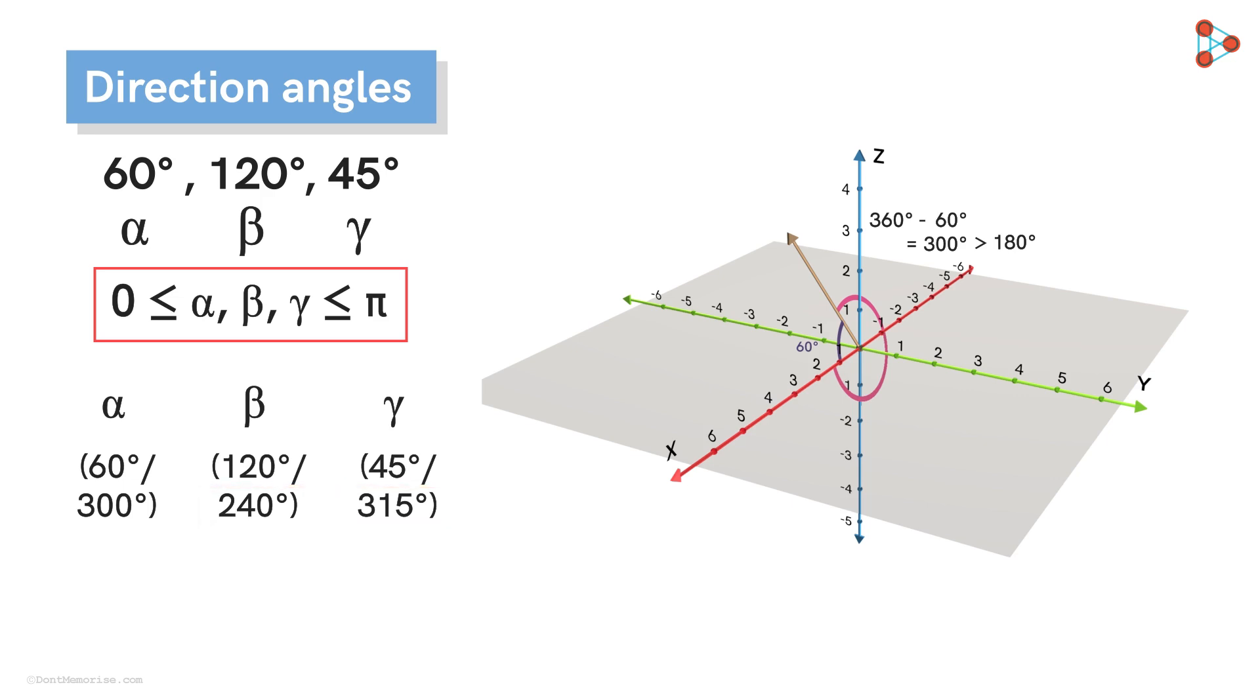So as you can see, there can be eight possible sets of direction angles for this vector. But by laying down this condition, we are breaking it down to one unique set, in which there will be no angle greater than 180 degrees.